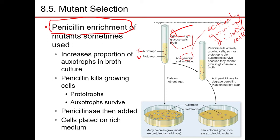The auxotrophs will not be harmed by penicillin because the auxotrophs are not dividing in the glucose salt broth — the growth conditions are not suitable for them. Only the prototrophs are dividing, because they can make use of the glucose salt broth and synthesize all the necessary nutrients they need, so they are happily dividing away. Therefore, penicillin will have an effect on those cells, not on the auxotrophs.